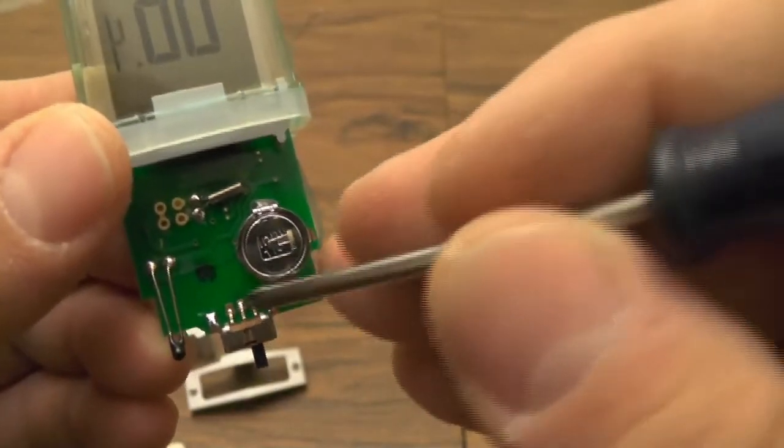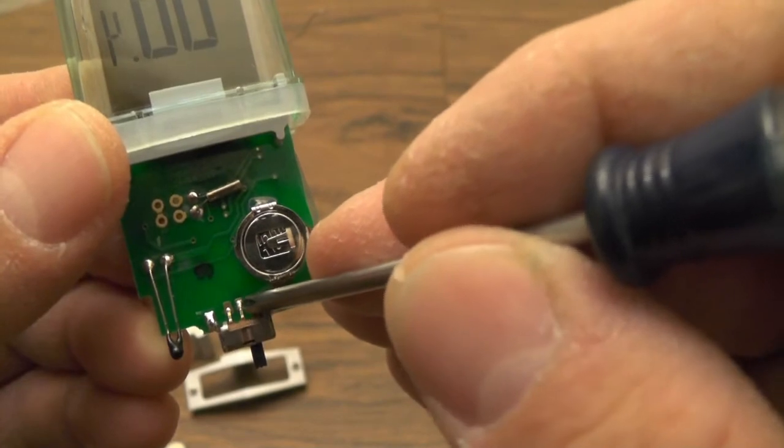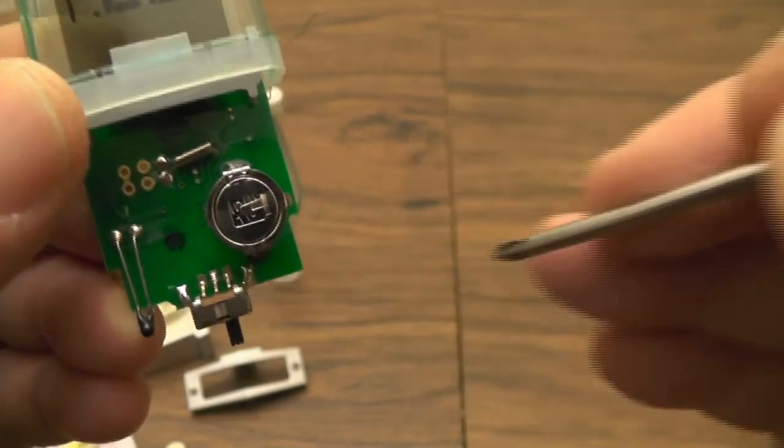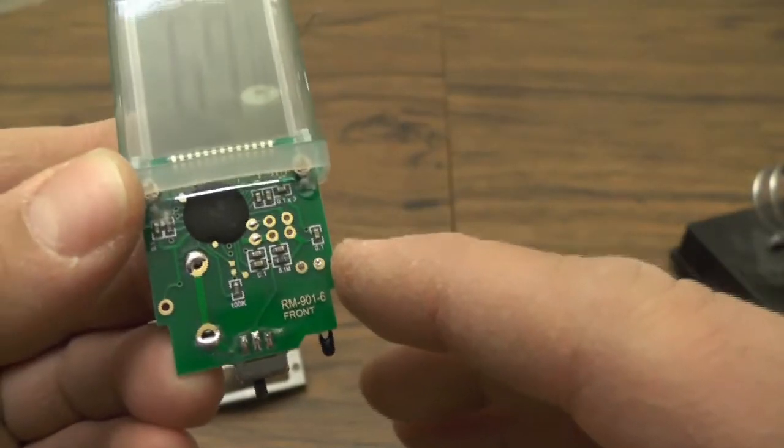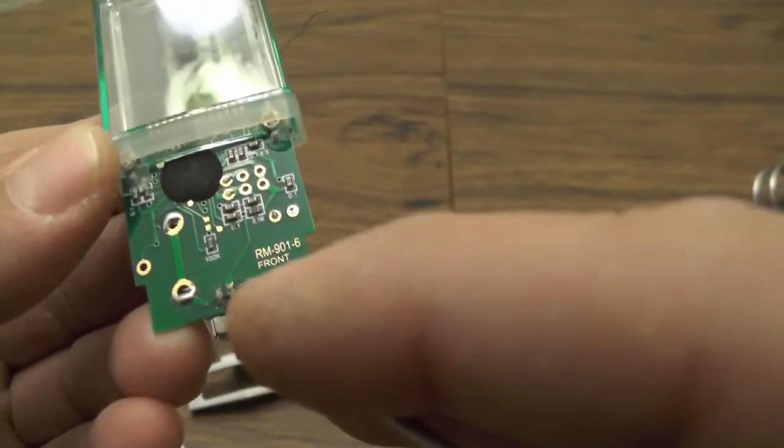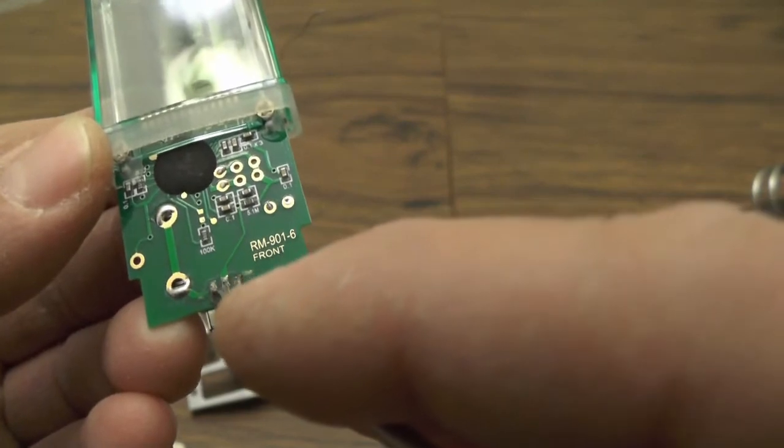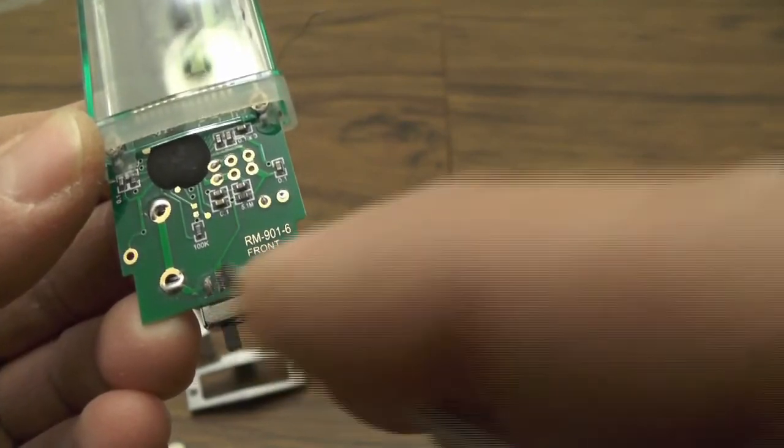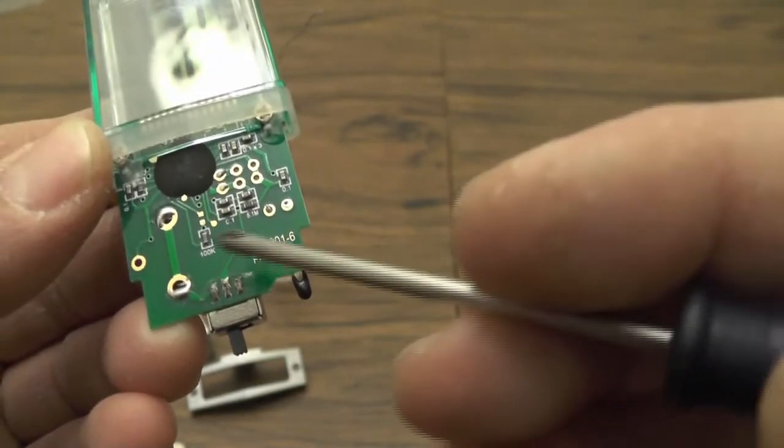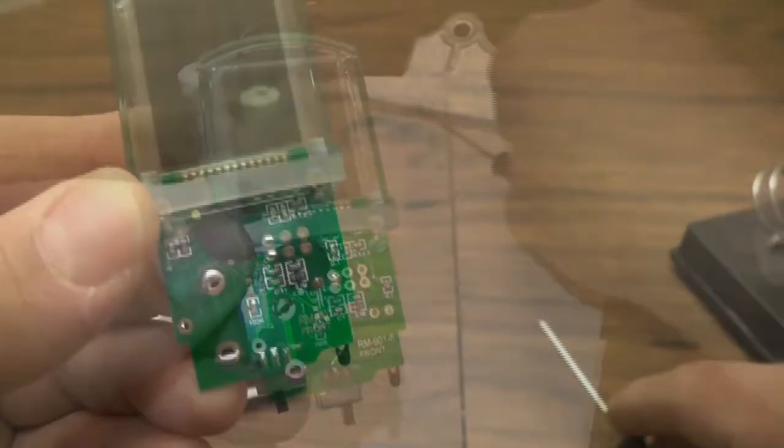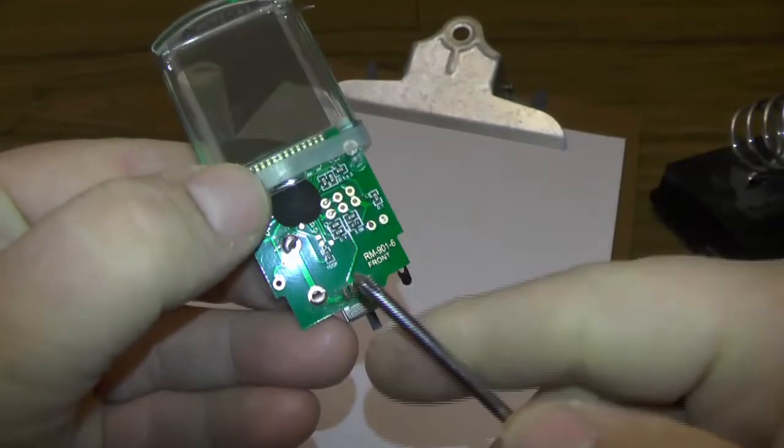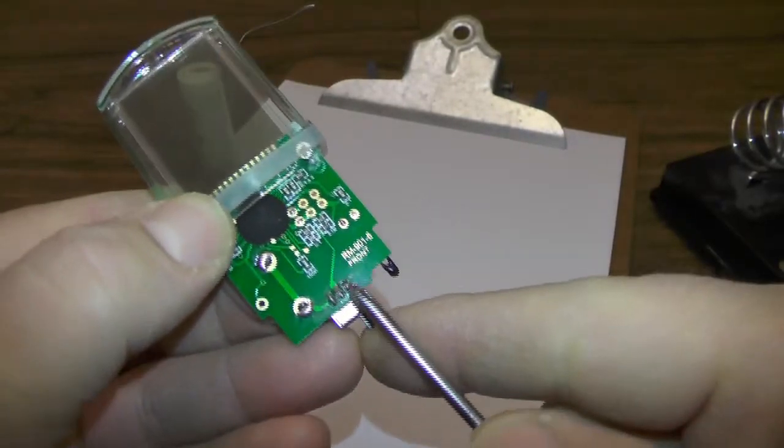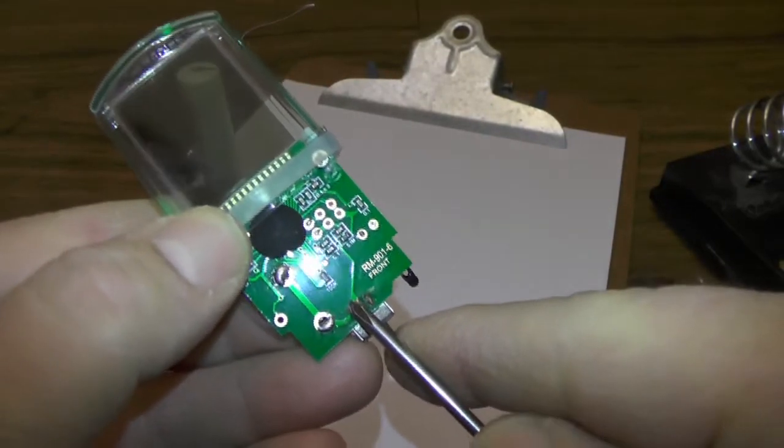So I've already tested it and it's these two terminals right here that the switch is making contact between so that the thermometer will operate. To make sure the thermometer is always turned on, I'm going to make a blob joint of solder between these two contacts on this side of the board so that power is always flowing from the battery to power the device. I can actually verify this by just taking my screwdriver and holding it right between these two contacts.